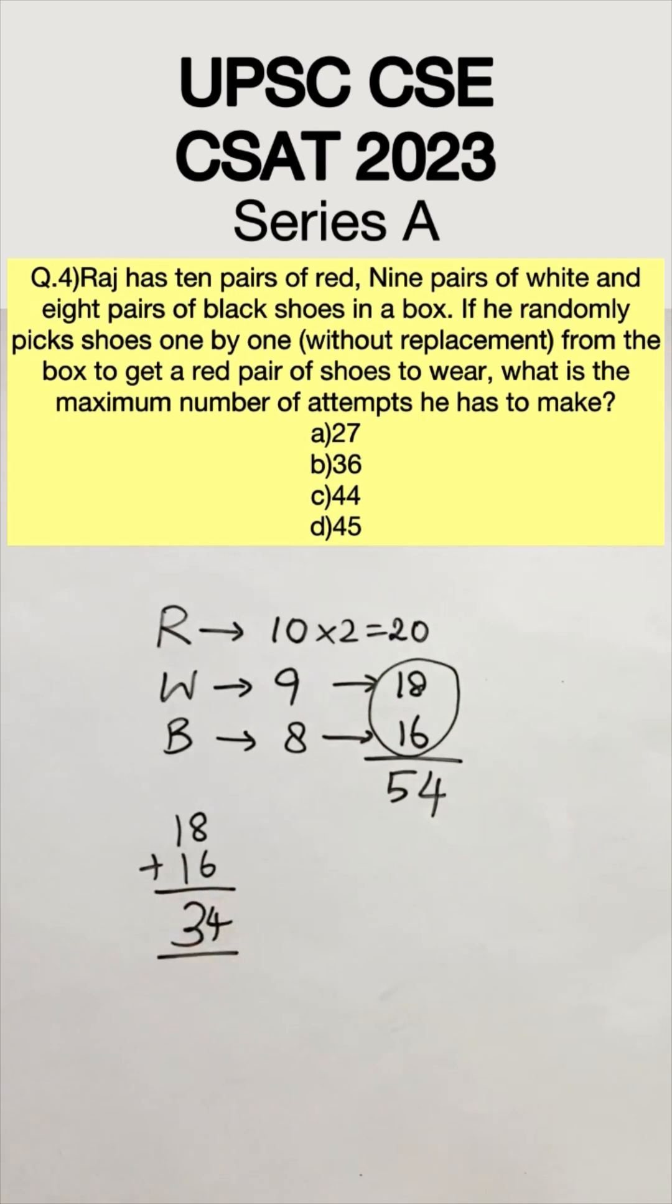Now naturally our following attempts would be a red shoe. But we should notice that there is going to be equal number of left shoes and right shoes. Therefore we need to find the worst case scenario because they have asked for the maximum number of attempts.